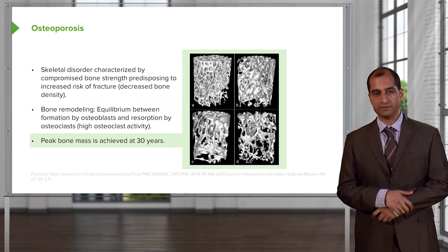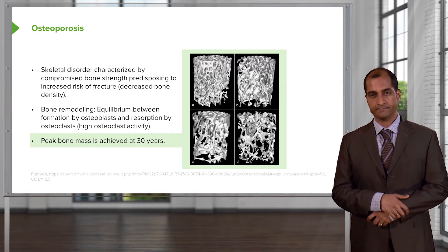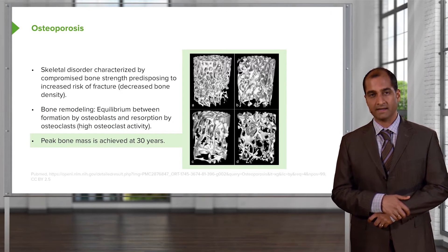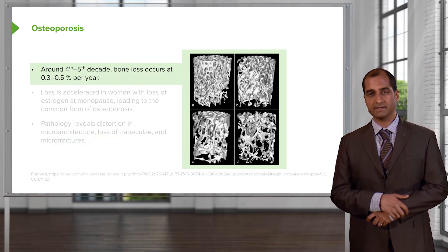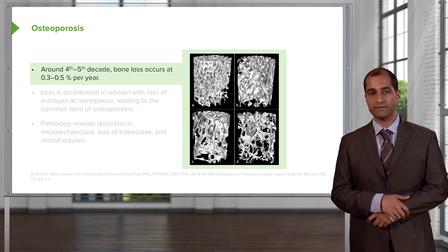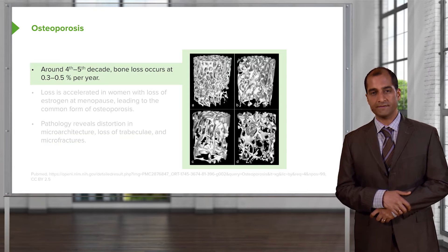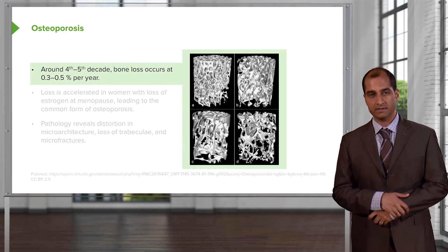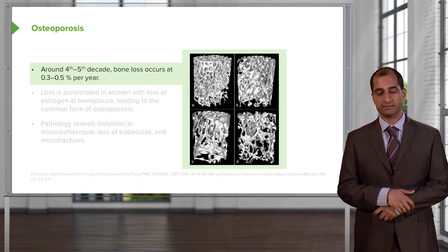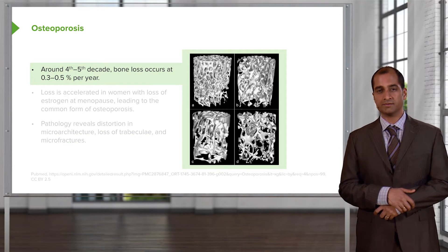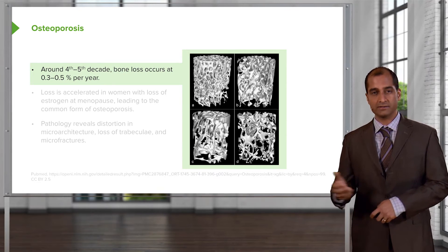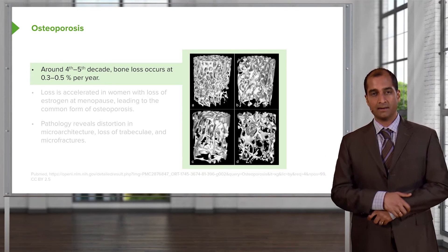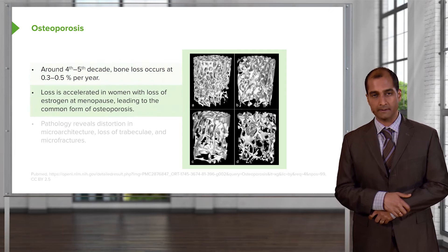On average, peak bone mass is achieved by age 30. Anything after that depends on how the patient has been taking care of himself or herself. Around the 4th to 5th decade — so we're talking about the 40s and 50s — bone loss occurs automatically due to age at approximately 0.5% per year.